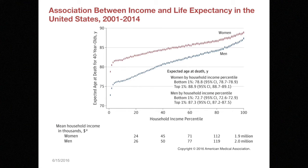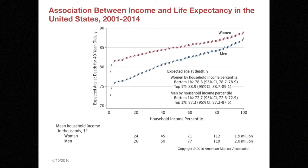It matters a lot these days because income is more than ever before correlated with social capital and family background. The more education you get, the higher your weekly earnings are likely to be — a straight-line correlation. There is even a correlation between income and life expectancy in the United States: the higher your income, the longer you're likely to live. Behind the unequal incomes, the unequal outcomes are income-based gaps in opportunities, life experiences, and supports.